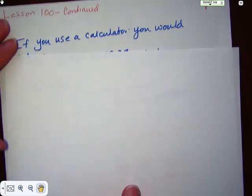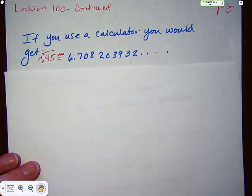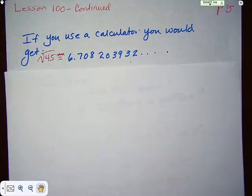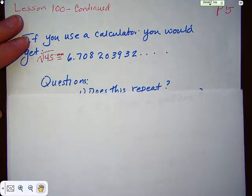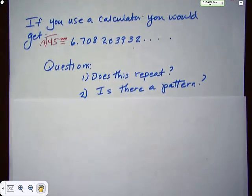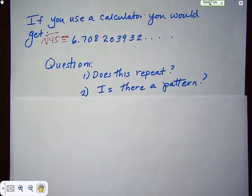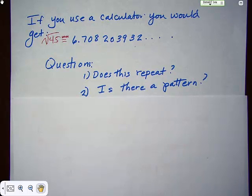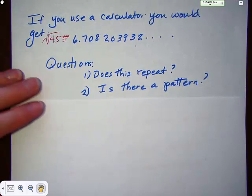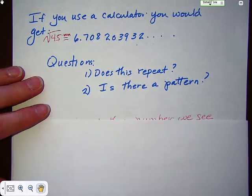To be absolutely honest with you, the square root of 45 is 6.708203932... It goes on forever and ever. Ask yourself: does it repeat? Is there a pattern? Does it terminate? The answer to all three of those questions is no, no, and no. It does not repeat, there is not a pattern, and it does not terminate.